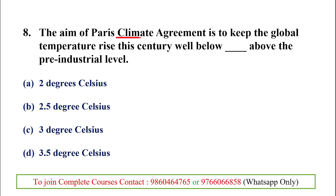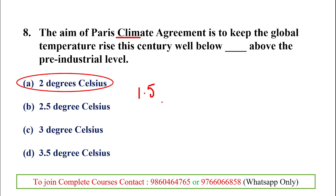The next question is regarding the Paris Climate Agreement. The Paris Climate Agreement relates to climate change and aims to keep the global temperature rise this century well below a certain threshold. That limit is 2 degrees Celsius above pre-industrial levels. The aim is to strengthen the global response to the threat of climate change and to also pursue efforts to limit the temperature increase to 1.5 degrees Celsius. Going above 2 degrees Celsius is not acceptable.